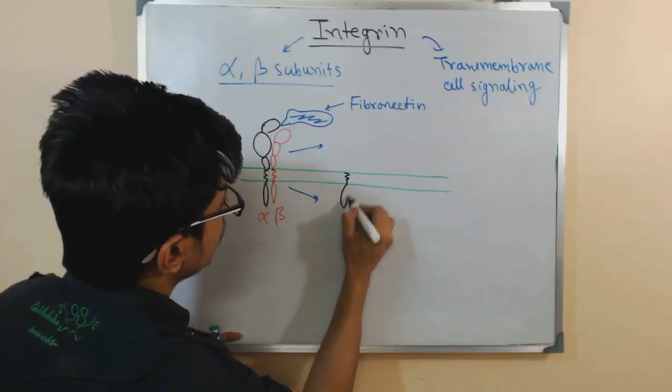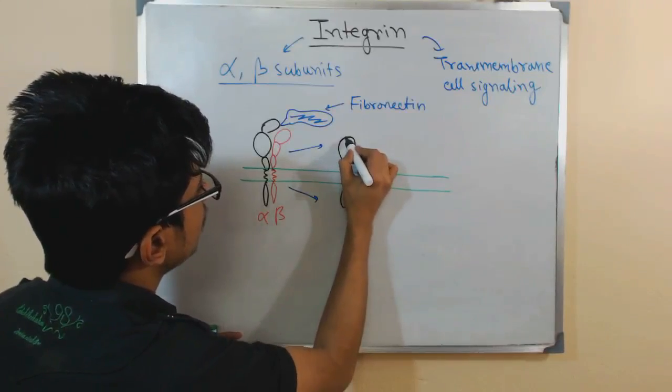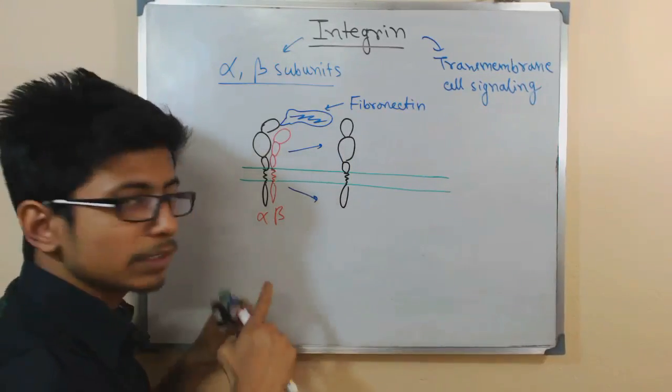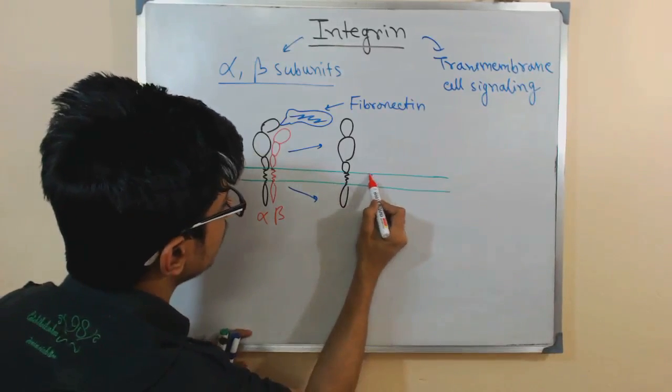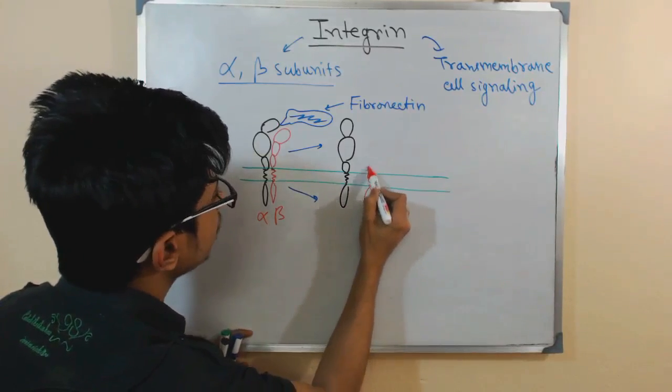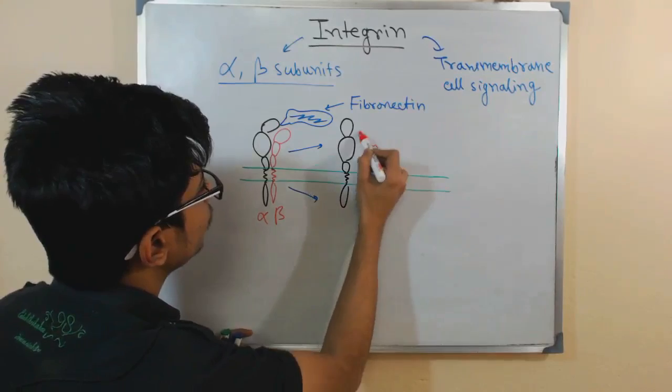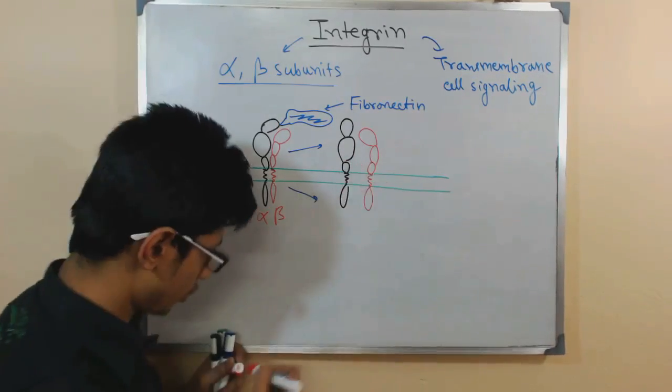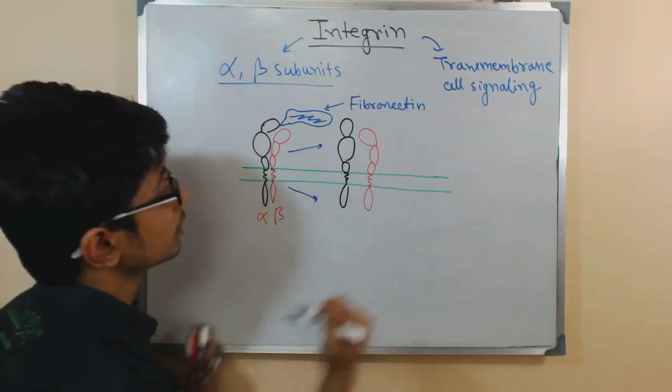This subunits start to dissociate from each other. They are kind of separated from each other like that. And the separation is 70 angstrom here. That's a very important thing.